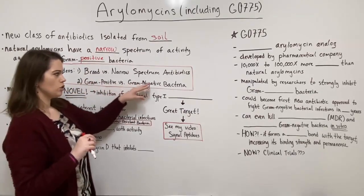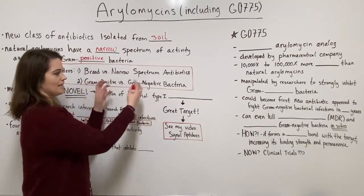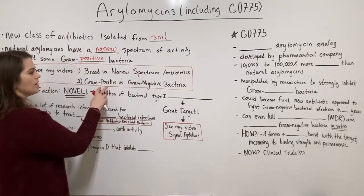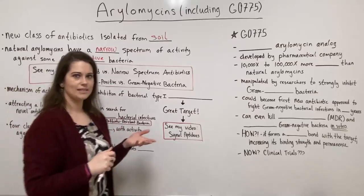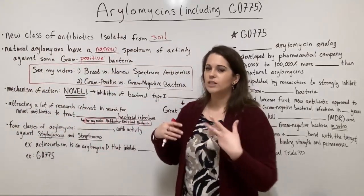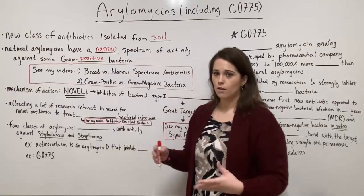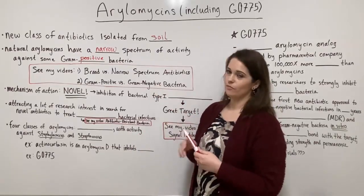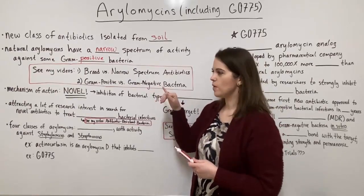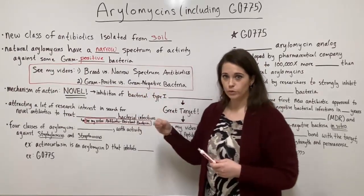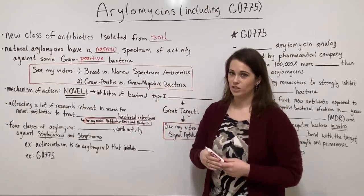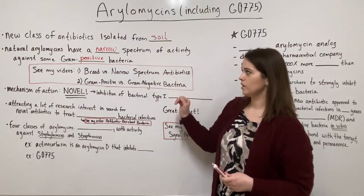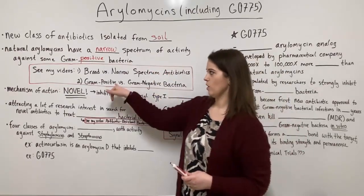That video will explain why we classify bacteria in these two ways and how their cell walls are different. You'll realize that gram positive bacteria are a little simpler for us to fight off and design antibiotics against than gram negative bacteria. In fact, we haven't had a new antibiotic approved for use in fighting gram negative bacterial infections in about 50 years. And the natural arylomycins were really only active against some gram positive bacteria.